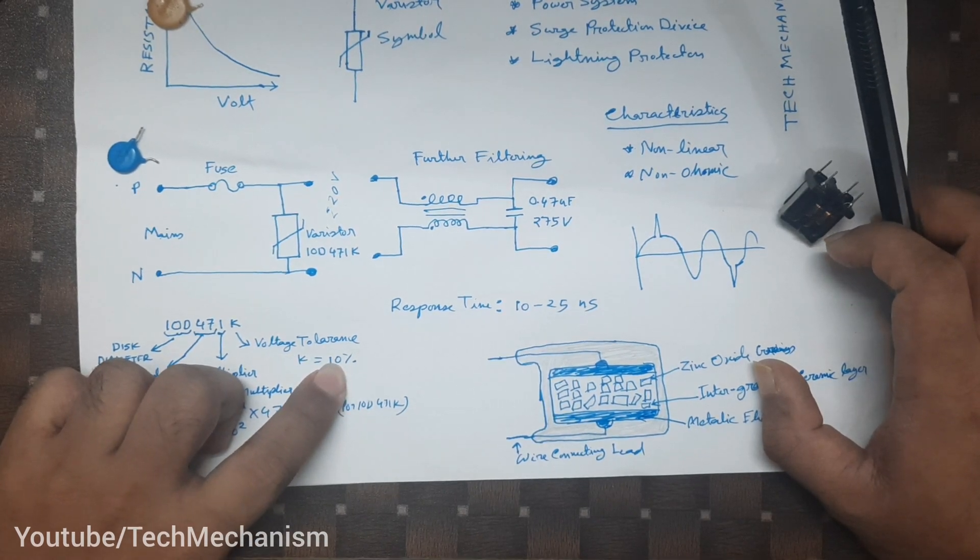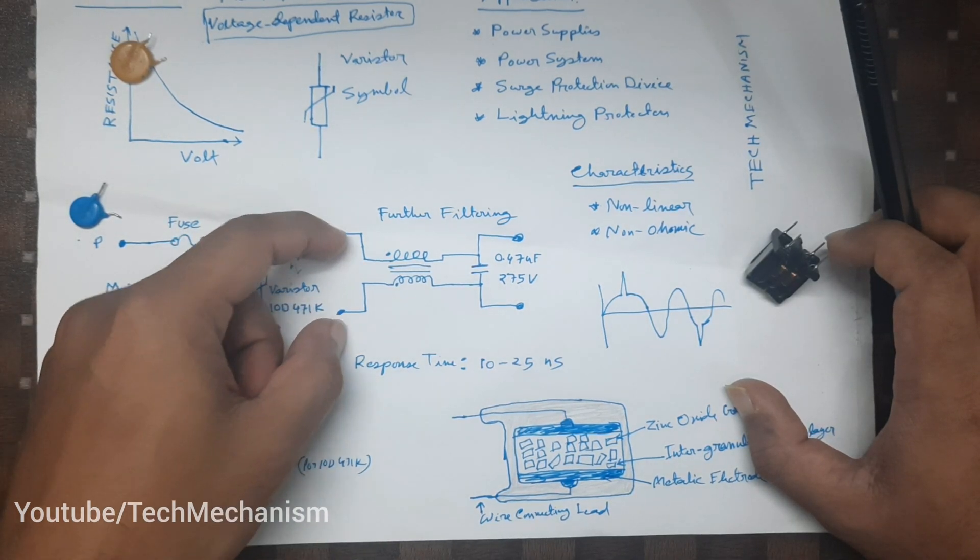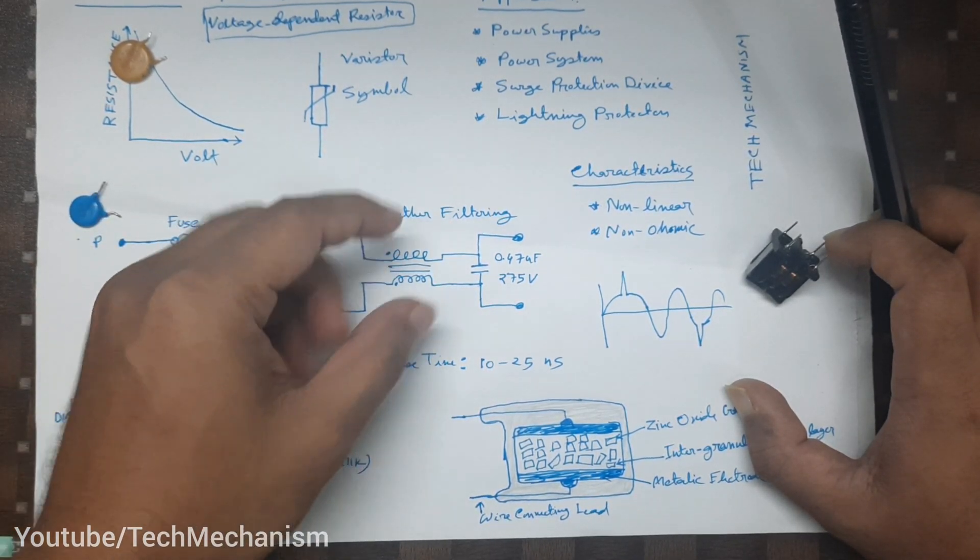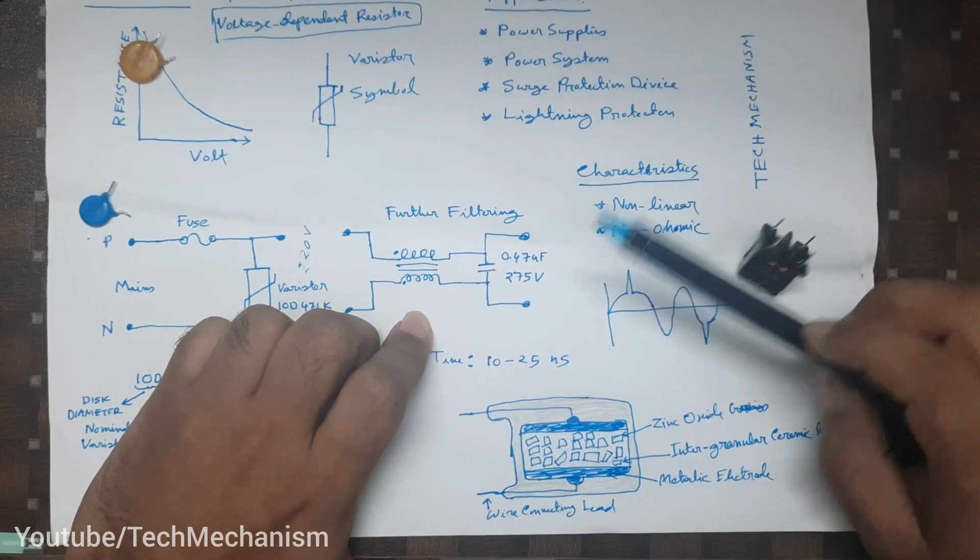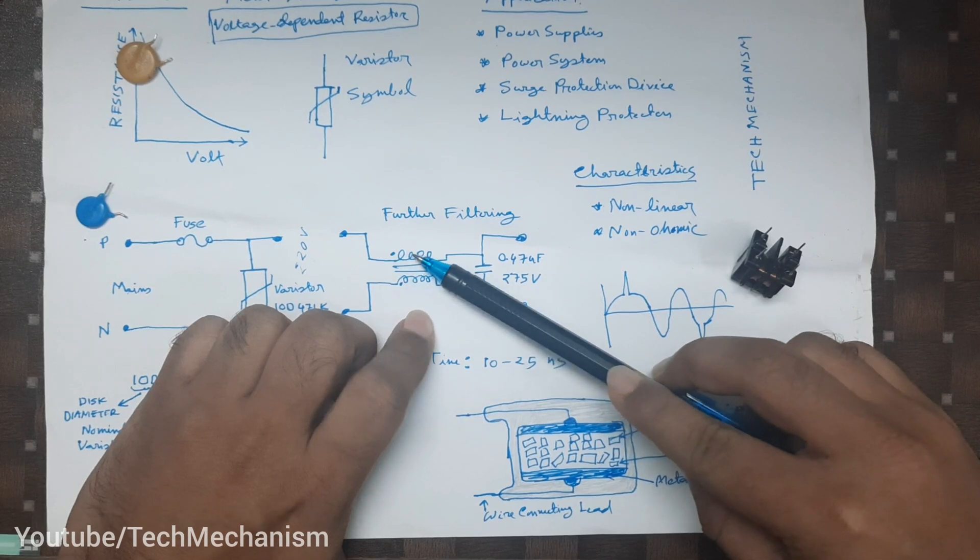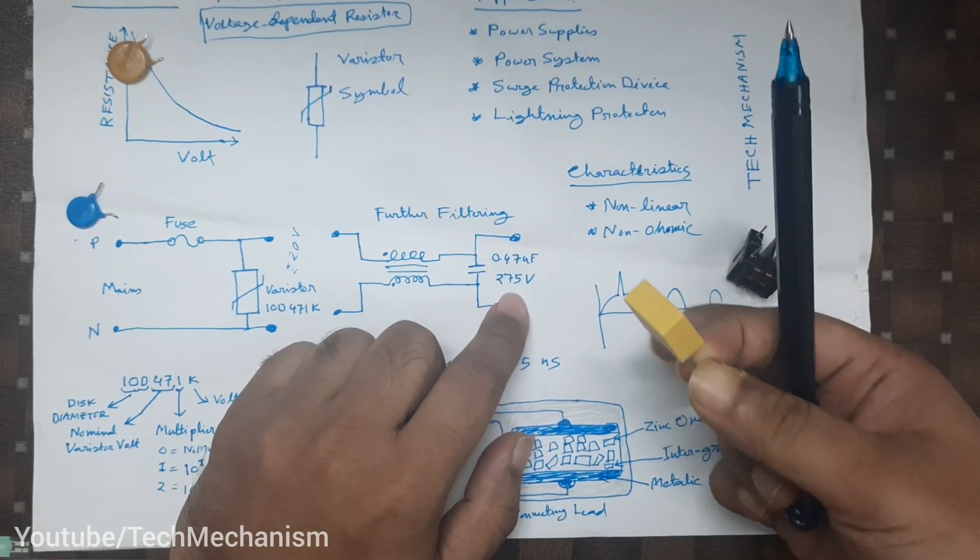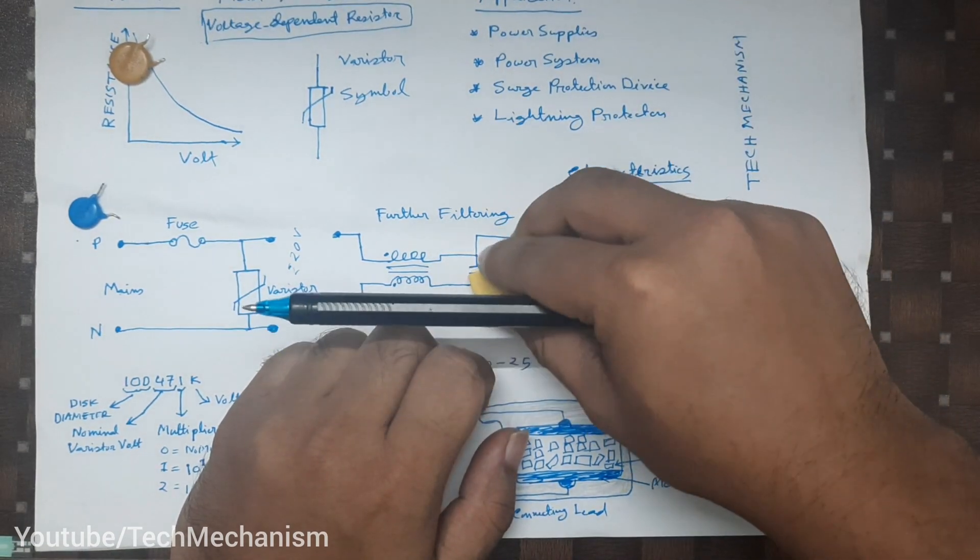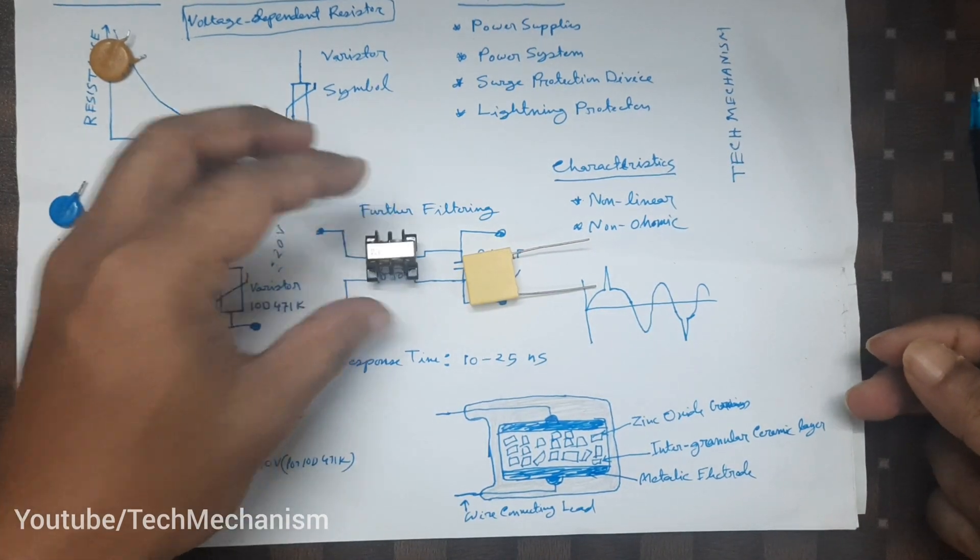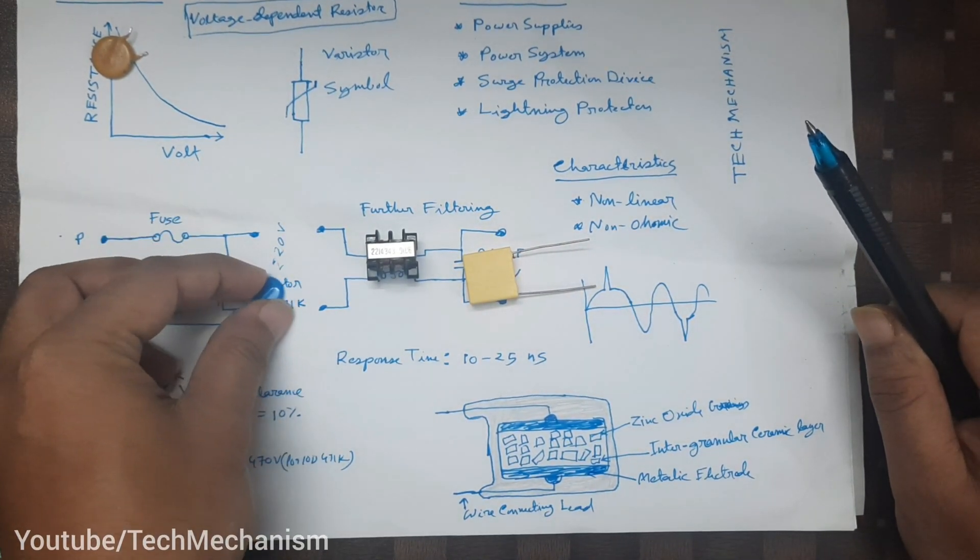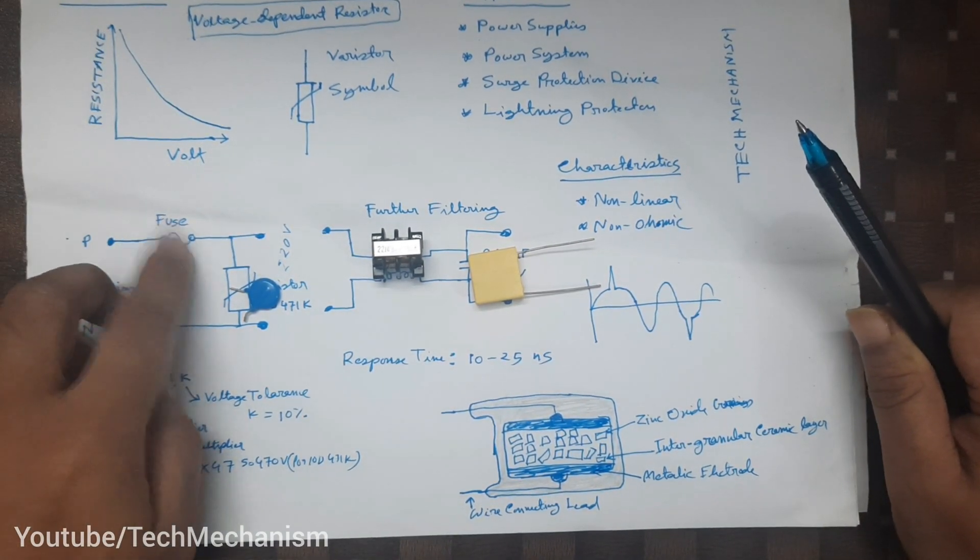If you want to filter its output further, like electrical noise, if you want to reduce the noise to a further level, you can use a common mode choke here, a common mode choke and a capacitor like this 0.47 microfarad and 275 volts, this kind of capacitor. We have here a common mode choke and here we have a varistor. Unfortunately, I don't have a fuse with me now, so you have to connect a fuse here.